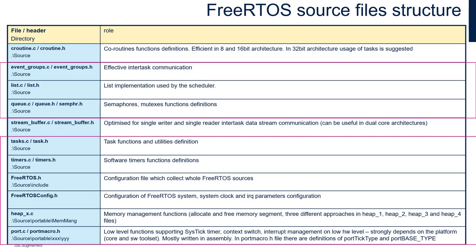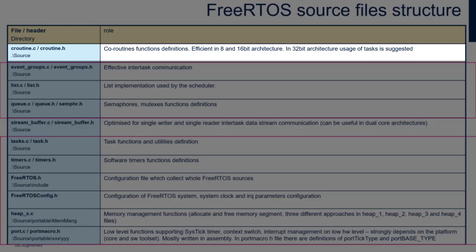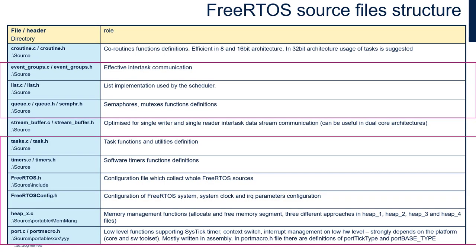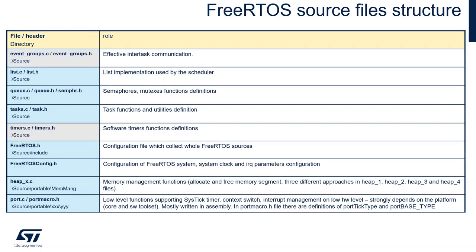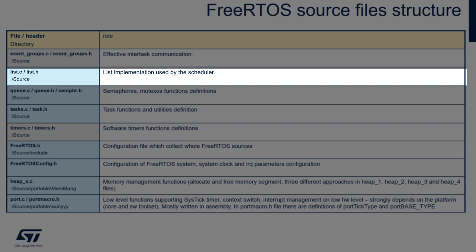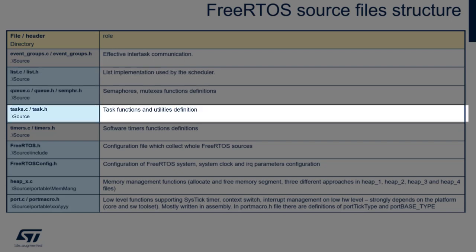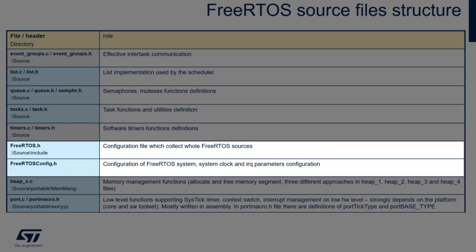Here we can see the complete list of files found within the FreeRTOS implementation for STM32. The key files that must be present in all FreeRTOS-based applications are: list.c and list.h (source code for scheduler operations), task.c and task.h (source code for task-related functions), FreeRTOS.h and FreeRTOSConfig.h (containing FreeRTOS configuration). Less critical files include croutine files for coroutines used in 8 and 16-bit architectures, and stream_buffer for stream buffer implementation.